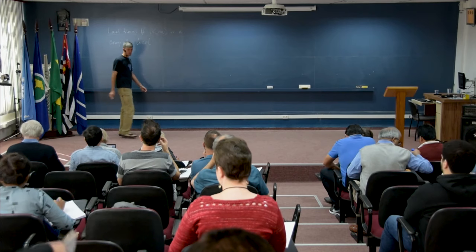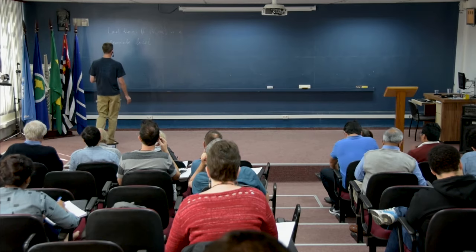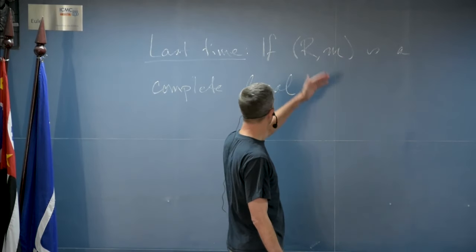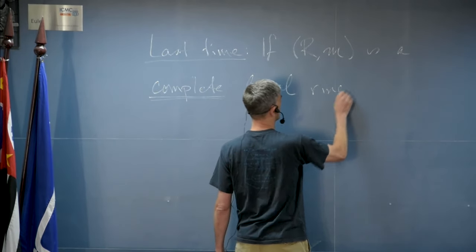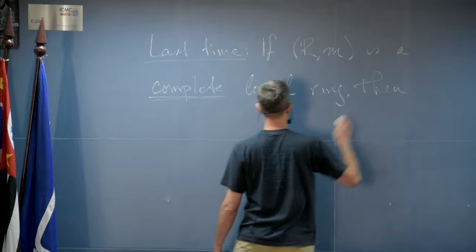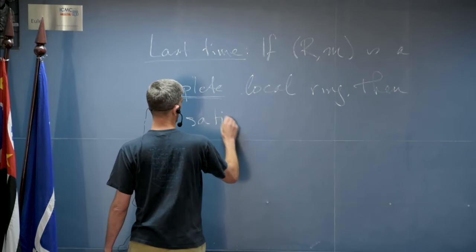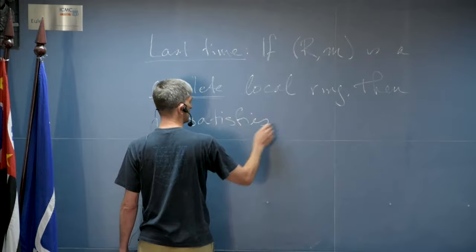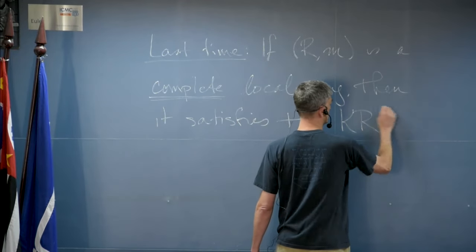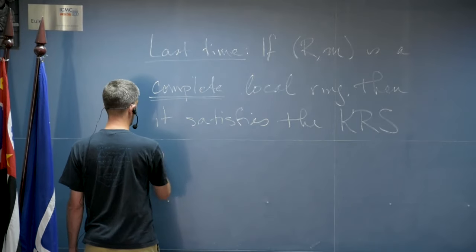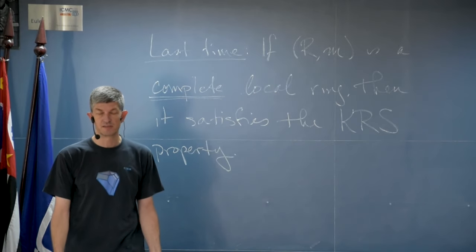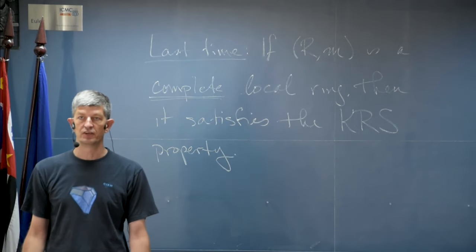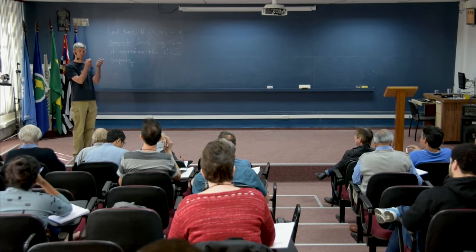So the one-sentence summary of yesterday's talk is if R is a complete, and this is the important word in this sentence, complete local ring, then it satisfies the Krull-Remak-Schmidt property. In other words, direct decompositions of finitely generated modules are essentially unique up to permuting the factors.